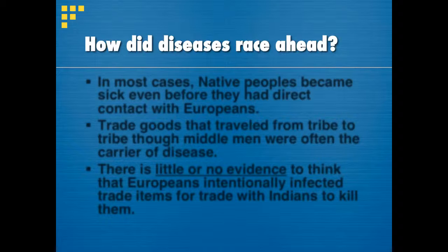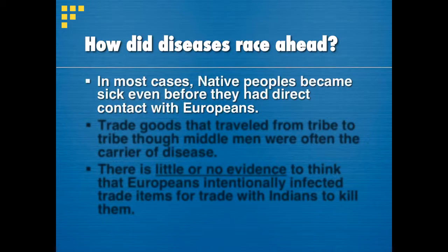How did the diseases race ahead of the people? The Europeans landed on the shores of North and South America, but the diseases they brought were carried on the wind — often hundreds of miles ahead of the Europeans themselves. Natives often died before they even met a European. In most cases, native peoples became sick before they had direct contact with Europeans, so they did not know what made them sick. They simply got sick and died.